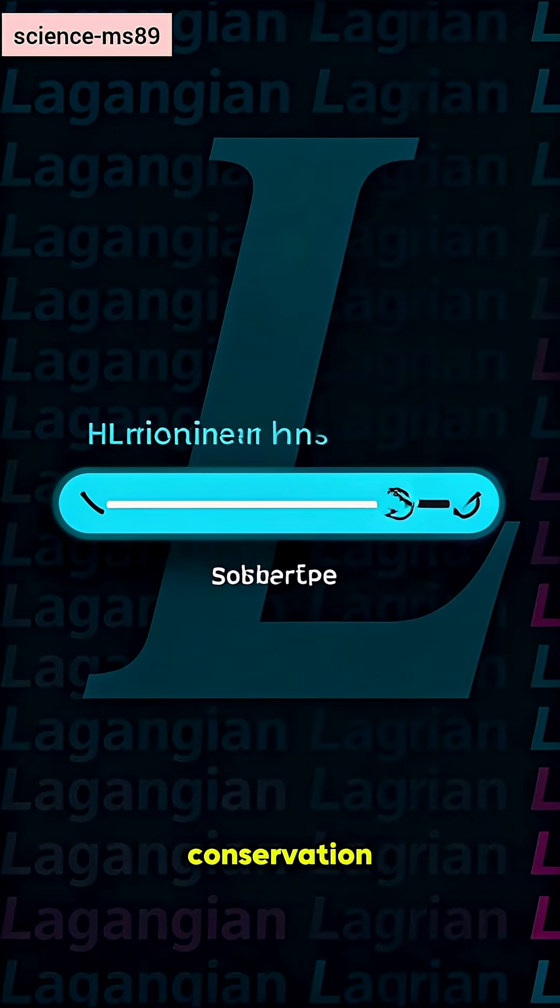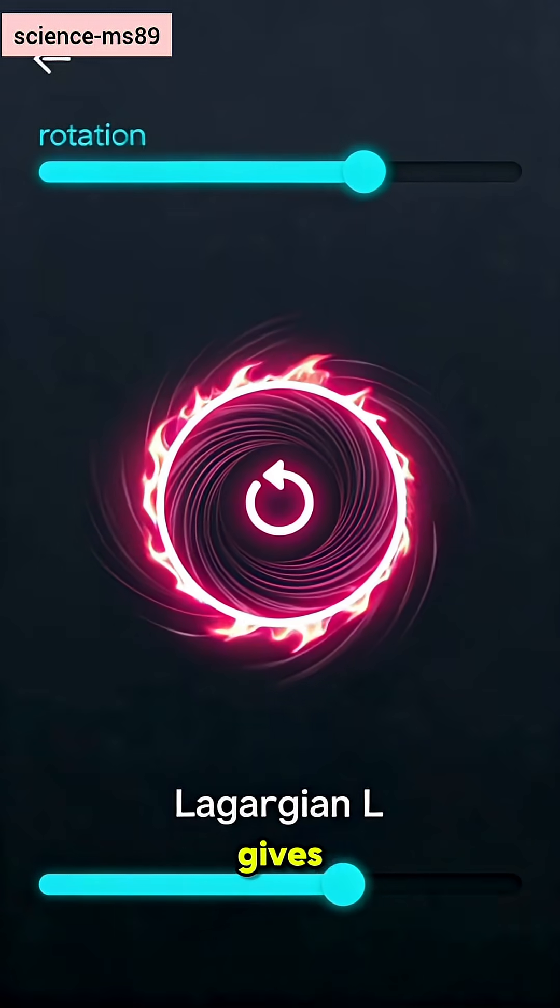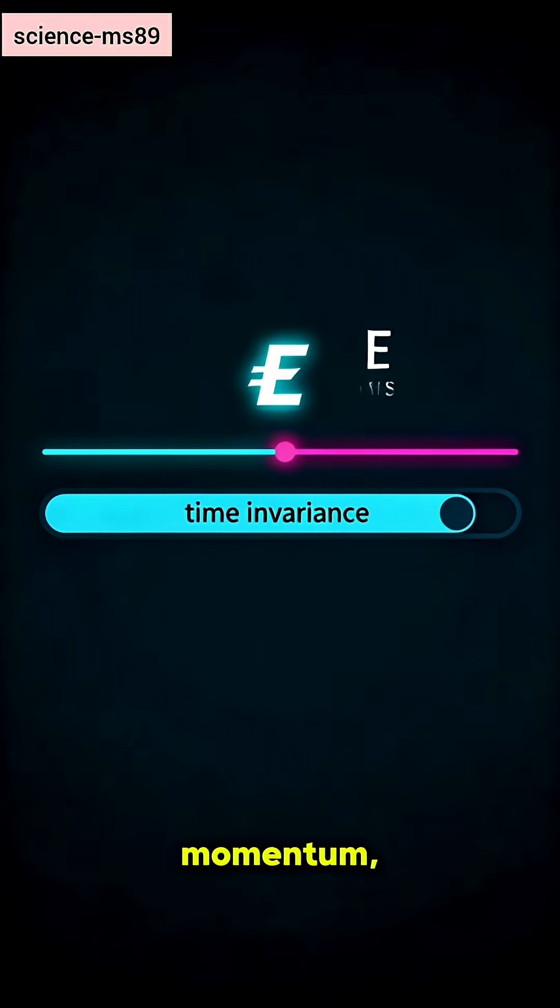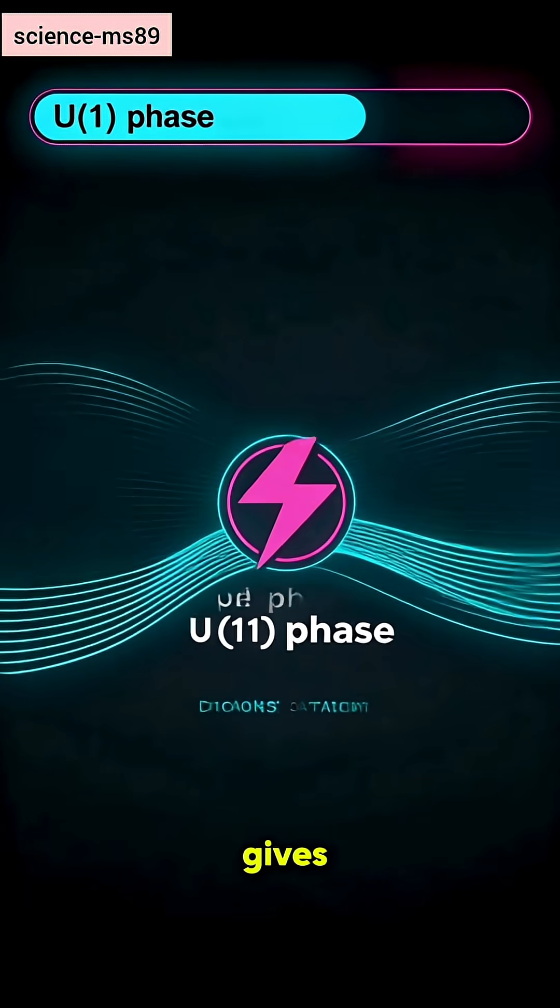Continuous symmetries generate conservation laws. Translation gives momentum. Rotation gives angular momentum. Time invariance gives energy. U1 gives electric charge.